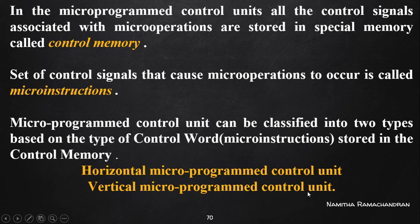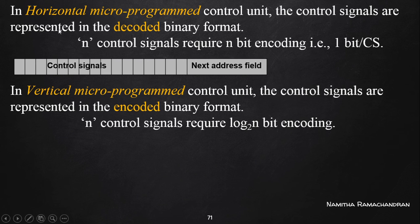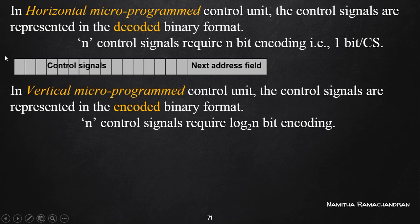Now we can consider the properties of horizontal and vertical micro instructions. The horizontal micro instruction contains control signals represented in decoded binary format. Decoded binary format means if we want to represent n control signals, we need n different bits — one bit per control signal. Each bit represents one specific control signal.